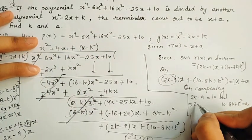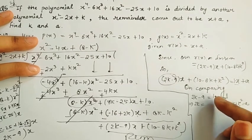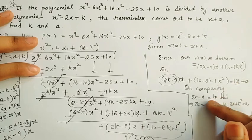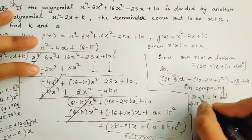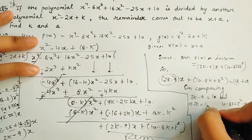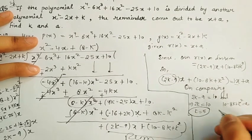So I should write here, since our R(x) on division is equal to (2k - 9)x + 10 - 8k + k², both should be equal, our R(x) and given R(x). So (2k - 9)x + 10 - 8k + k² should be equal to x + a, because every question has a unique remainder. So now what we do? After this, we do comparison. On comparing, comparing means what? Comparing means we have to compare coefficients. Variable's coefficient with variable's equal, and constant with constant equal. Now see carefully. Here the variable is x. So x's coefficient is 1. Nothing is there, so it's taken as 1. And here x's coefficient is this term. So we will keep both equal. So I am getting 2k - 9 = 1 and 10 - 8k + k² = a.